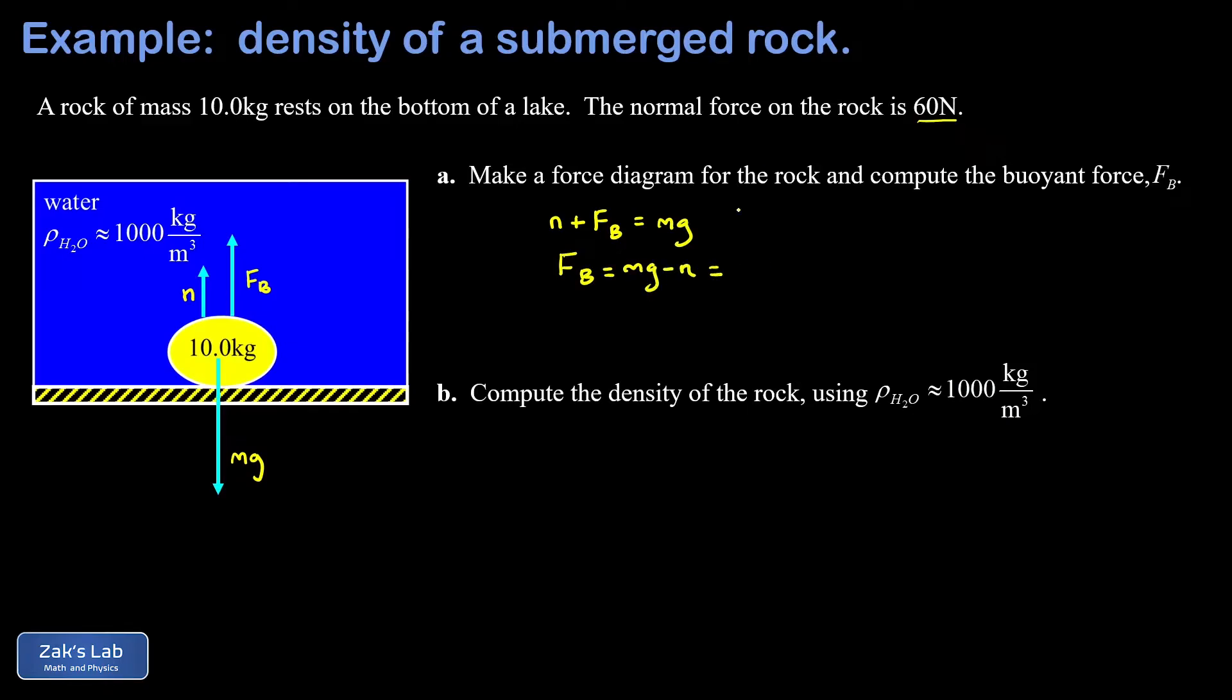So the sum of my upward forces, that's n plus the buoyant force, better be equal to the sum of all the downward forces, that's just mg. This allows us to quickly solve for the buoyant force: that's mg minus n. We know the mass of the rock is 10 kilograms, we're going to use 9.8 for g, and we were given the normal force as 60 newtons.